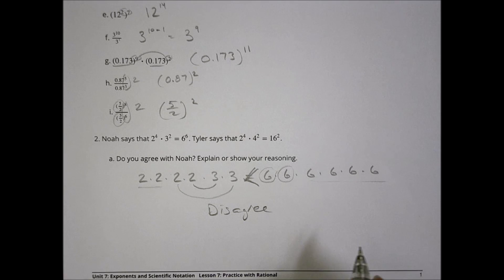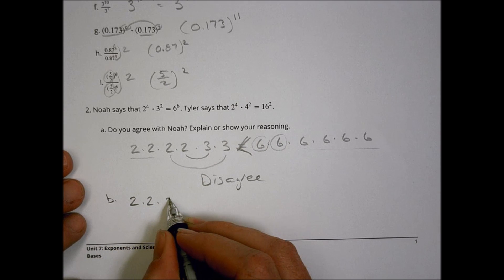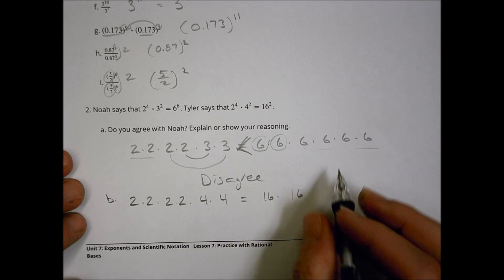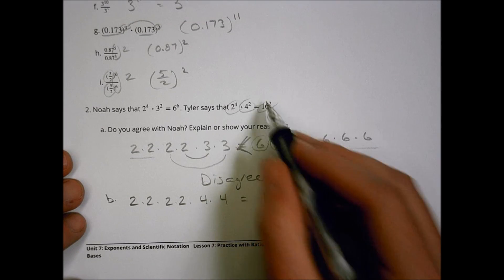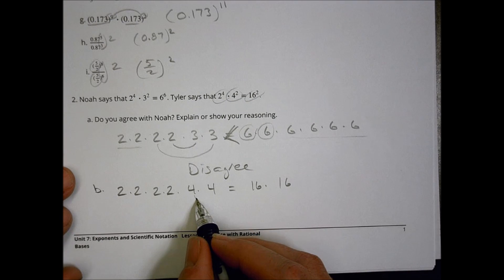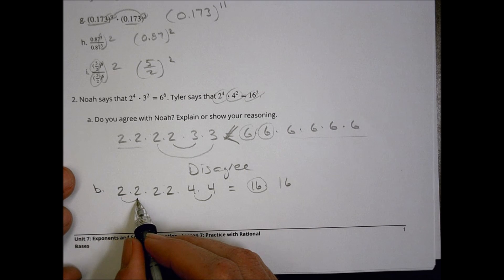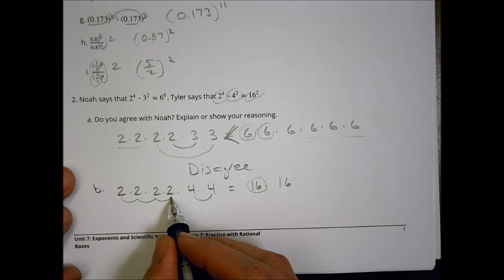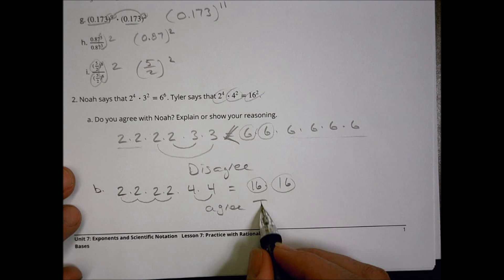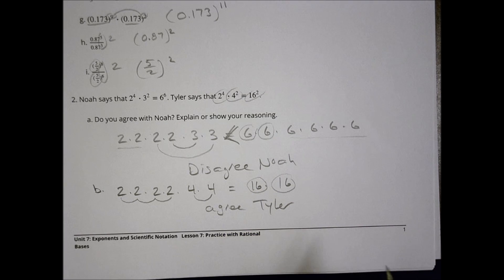But for Tyler, which is part B: Tyler says two to the fourth times four squared equals sixteen squared. Two to the fourth is two times two times two times two — that's 16. And four squared is four times four, which is also 16. So that indeed is equal. We agree with Tyler; Tyler is correct, Noah is incorrect. All right, that's it for today — see you next time.